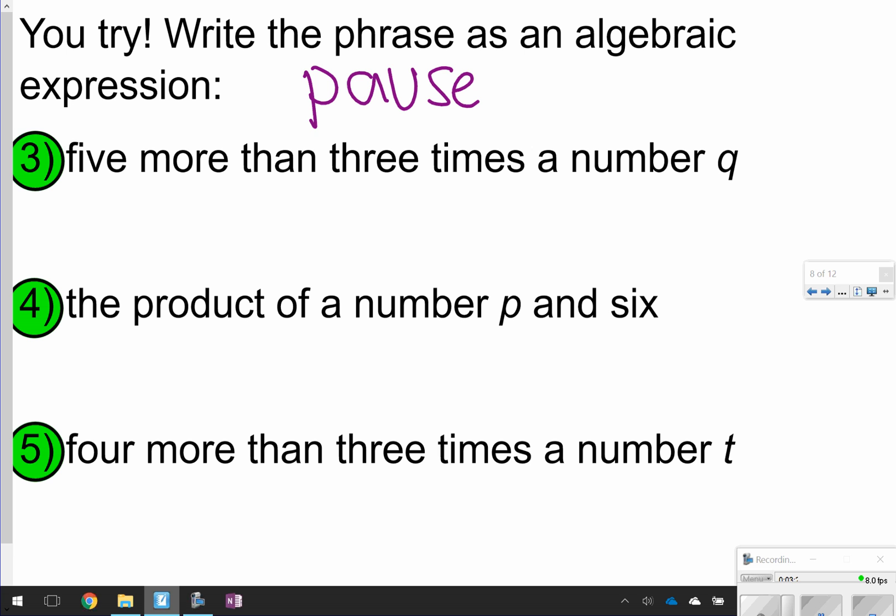So this one, number 3, says 5 more than 3 times the number cube. So 5 more would mean plus, so 5 more than 3 times the number cube. So that's 3 cube, or 3 times cube. For this one, it doesn't matter what order you put it in, so you could have 5 plus 3 cube, or 3 cube plus 5.